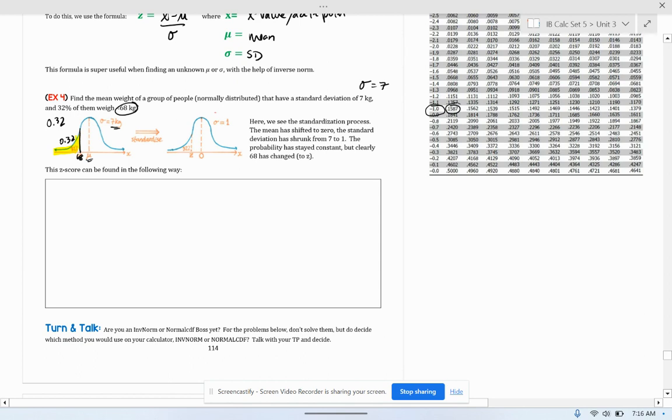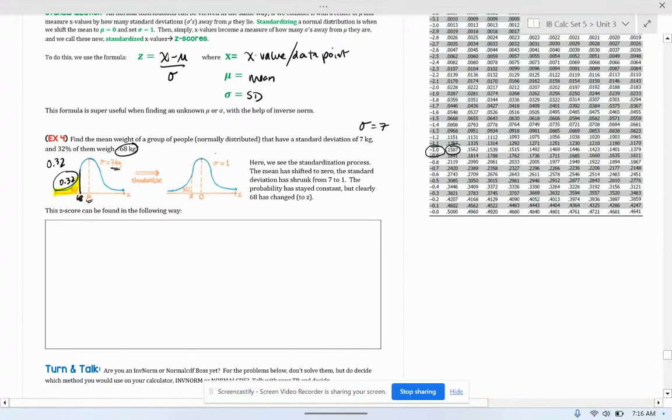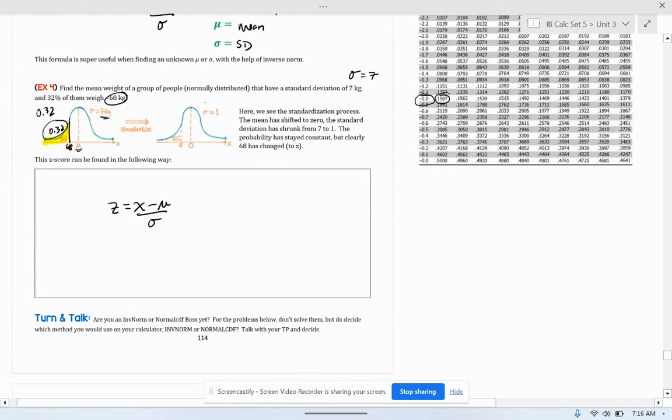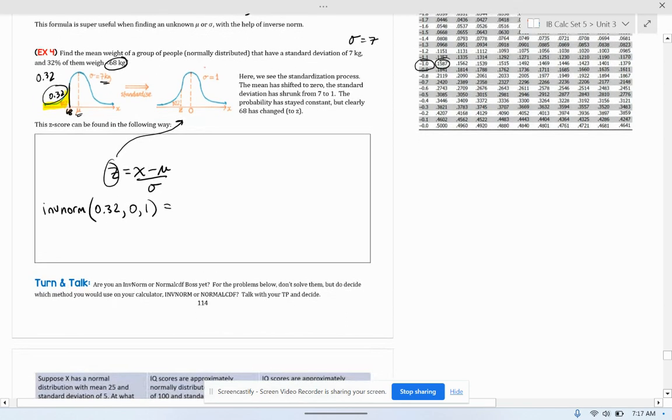It has a standard deviation of seven. So what we're going to want to do is standardize this area to the left of the curve of 0.32, turn it into a z-score, and then we can use it to find the unknown mean. So we're going to start with our formula. We've got z equals x minus the mean over the standard deviation. Z is going to come from our standard normal distribution curve. We're going to use inverse norm to find the corresponding z-score for an area of 0.32 to the left of the z-score. So we've got an area of 0.32, a mean of zero and a standard deviation of one. That's my input on the left-hand side of the equation.